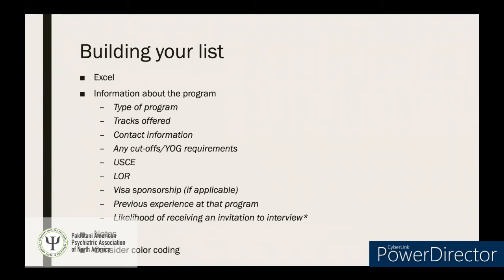Strongly suggest color coding your Excel sheet. For example: programs you're not applying to or cannot apply to (e.g., they don't offer needed visa sponsorship), programs you'll definitely apply to, programs you're considering, and programs you need more information from so you can reach out to clarify. Your notes and columns will help you determine what information you still need to make the best decision.